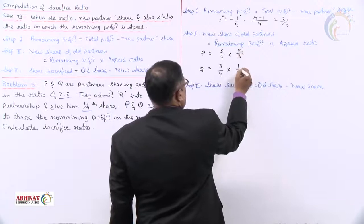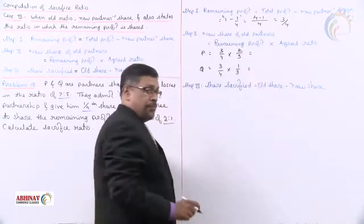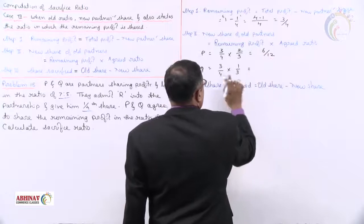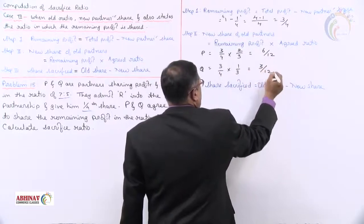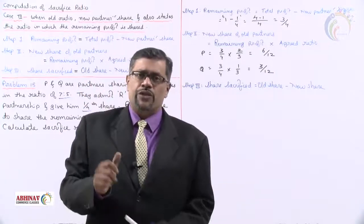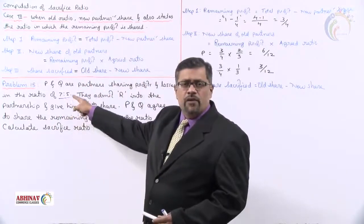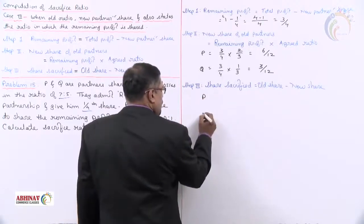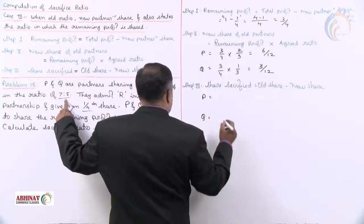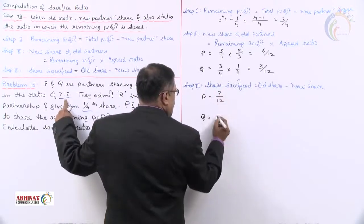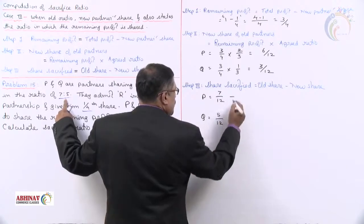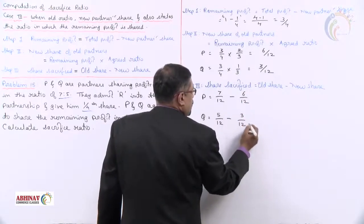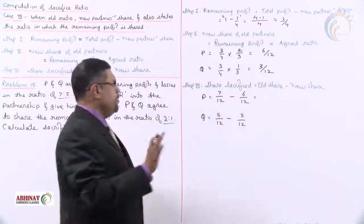The agreed ratio 2:1 gives fractions 2/3 and 1/3. Multiplying: P's new share = 3/4 × 2/3 = 6/12, and Q's new share = 3/4 × 1/3 = 3/12. Now for Step 3 — share sacrificed equals old share minus new share. Old ratio is 7:5, which is 7/12 and 5/12.